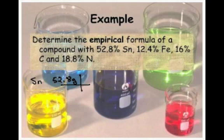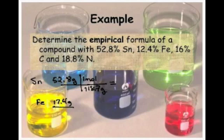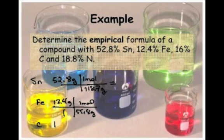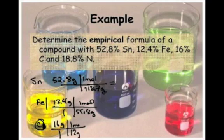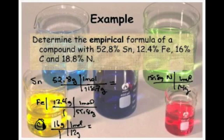We've got a bunch of percentages of elements in a compound. We're going to arbitrarily change those percentages into masses. We're just going to call them grams. Tin's molar mass is 118.7, so 118.7 grams. Iron 12.4, so 12.4 grams over one. That's 55.8 grams in one mole. And then I've got carbon, 16 grams of carbon. There's 12 grams in one mole. And I have 18.8 grams of nitrogen. 14 grams in one mole.